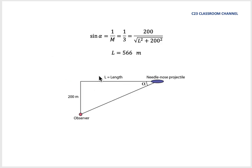From this trigonometry we can say that sin alpha equals 1 over M. We already know that the Mach number of this object is 3, so we have 1 over 3. We can use the idea of sin here, so we have the value of 200 meters, and the hypotenuse here can be calculated by square root of L squared plus 200 squared.